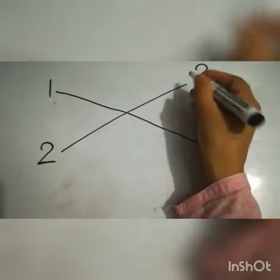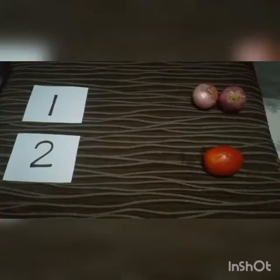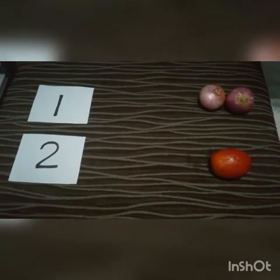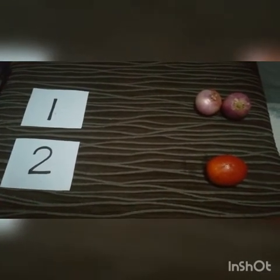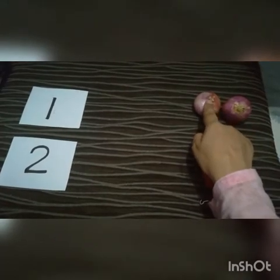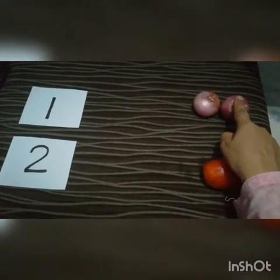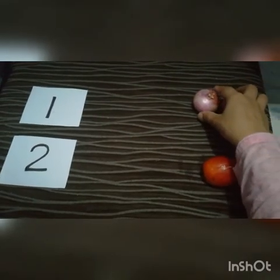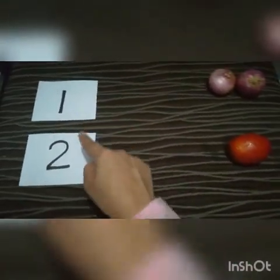Two — match the similar number two. Now you are going to count the objects and match to the related number. We have some vegetables. Count: one, two — there are two onions. So where is two written on these cards? Find out.